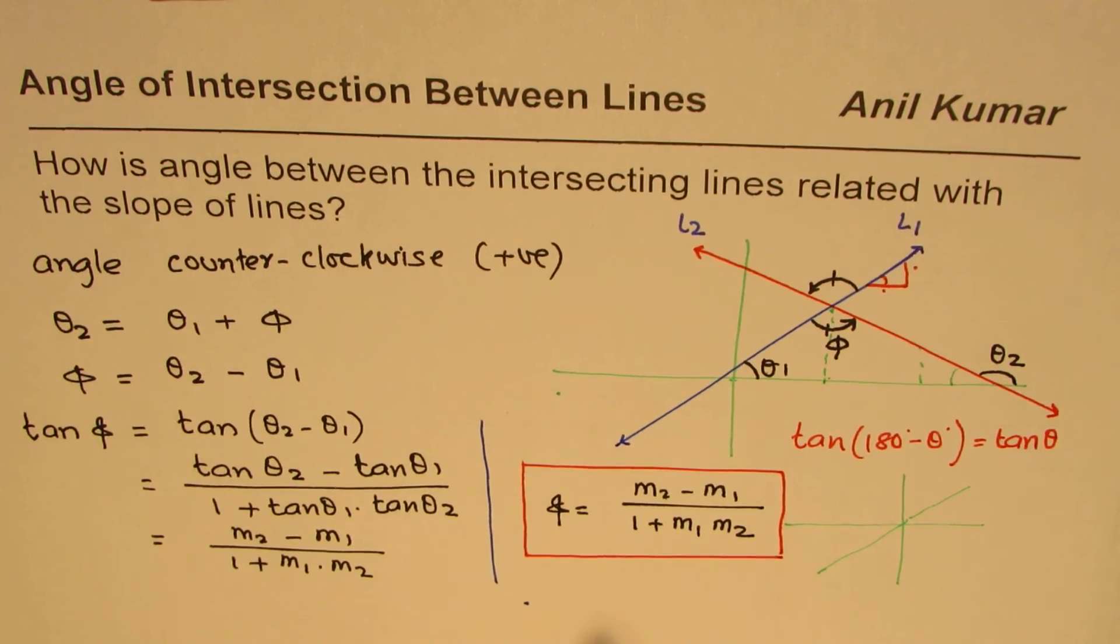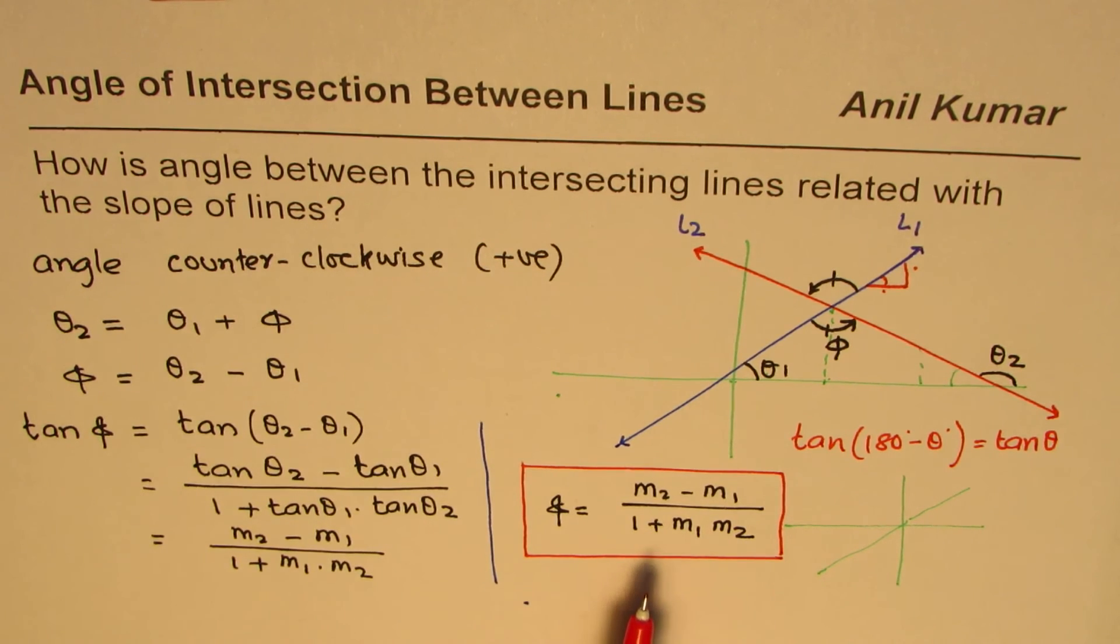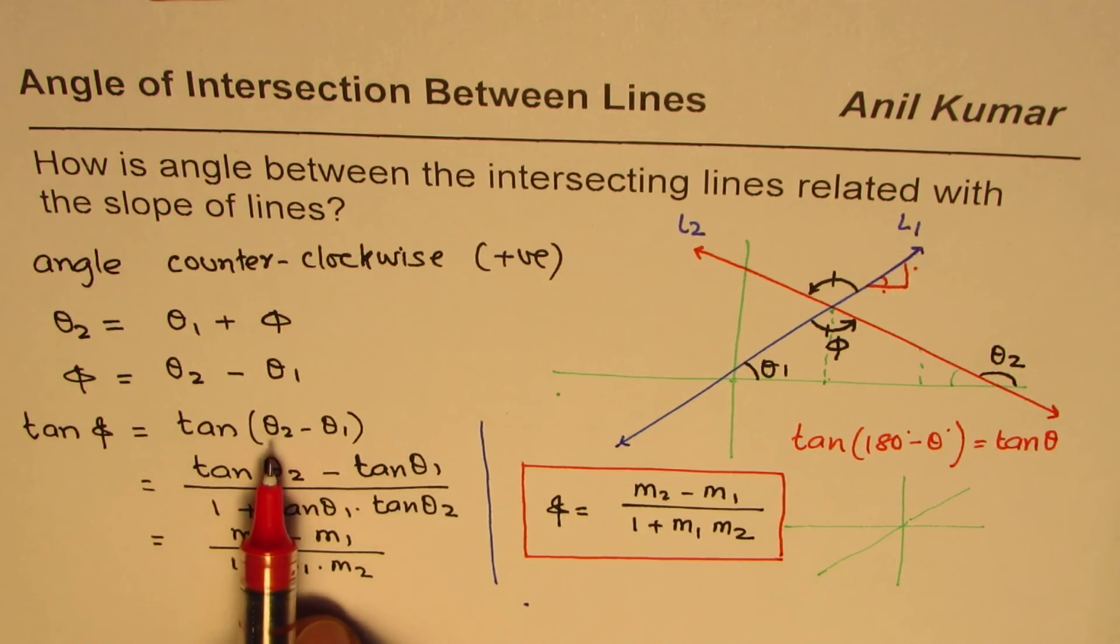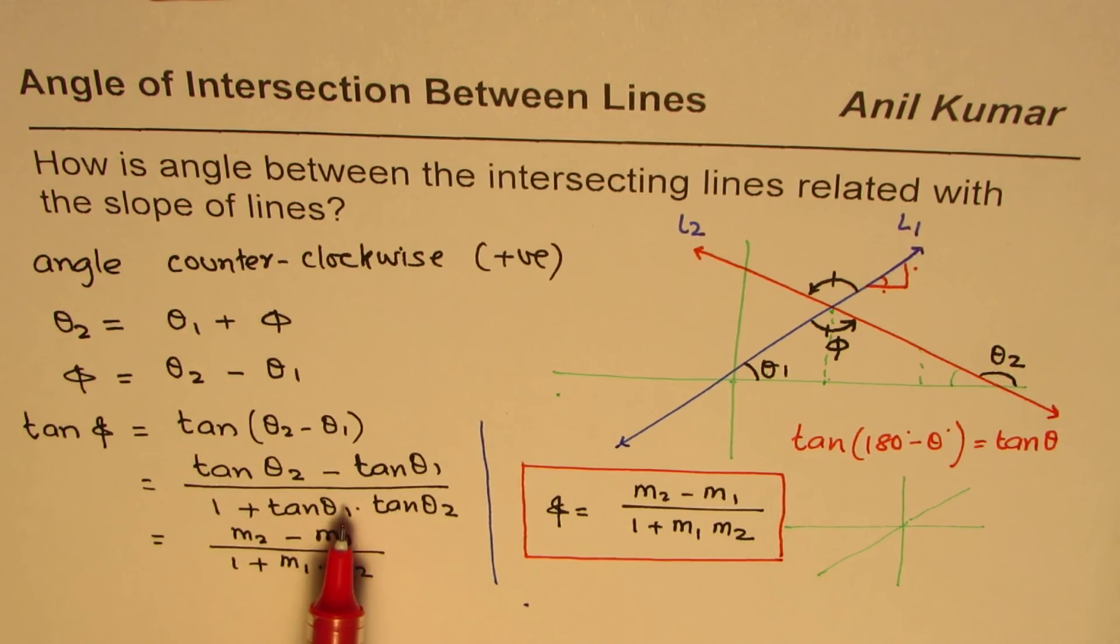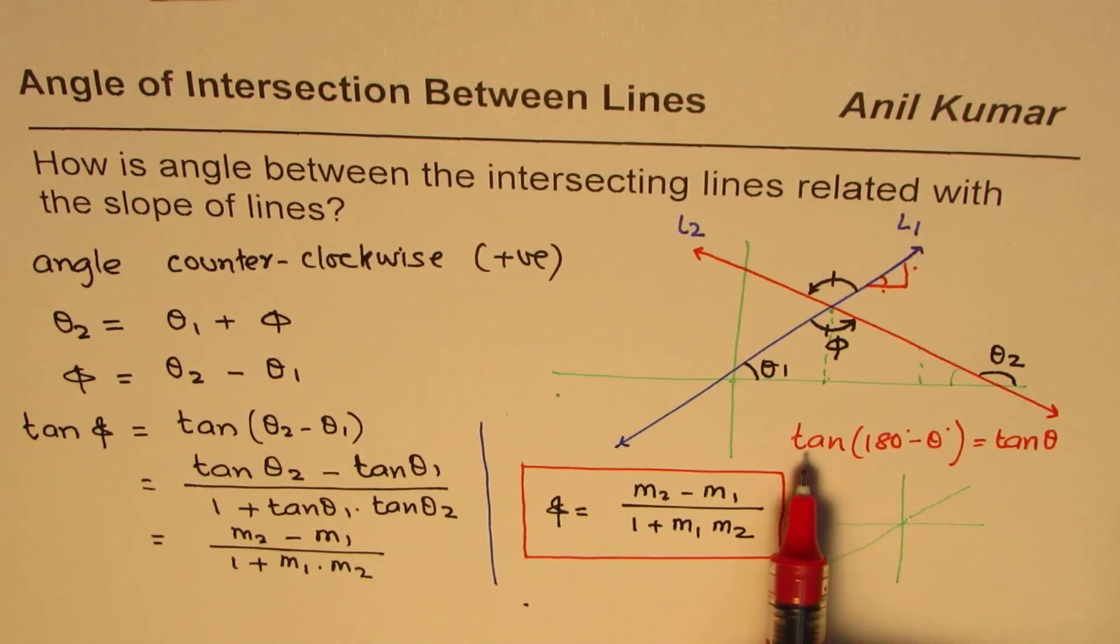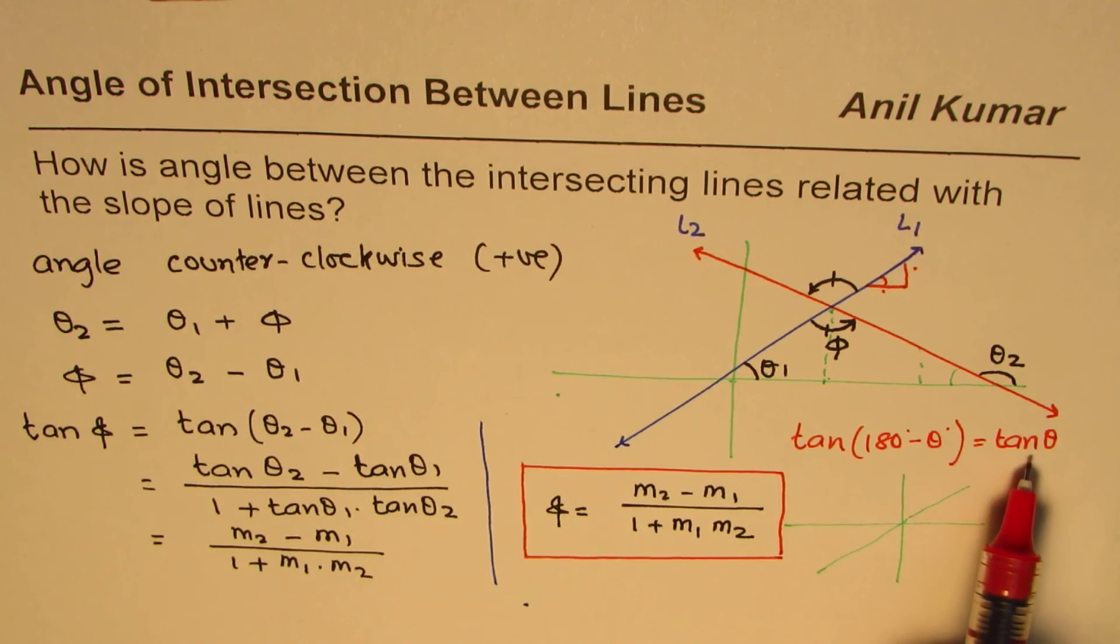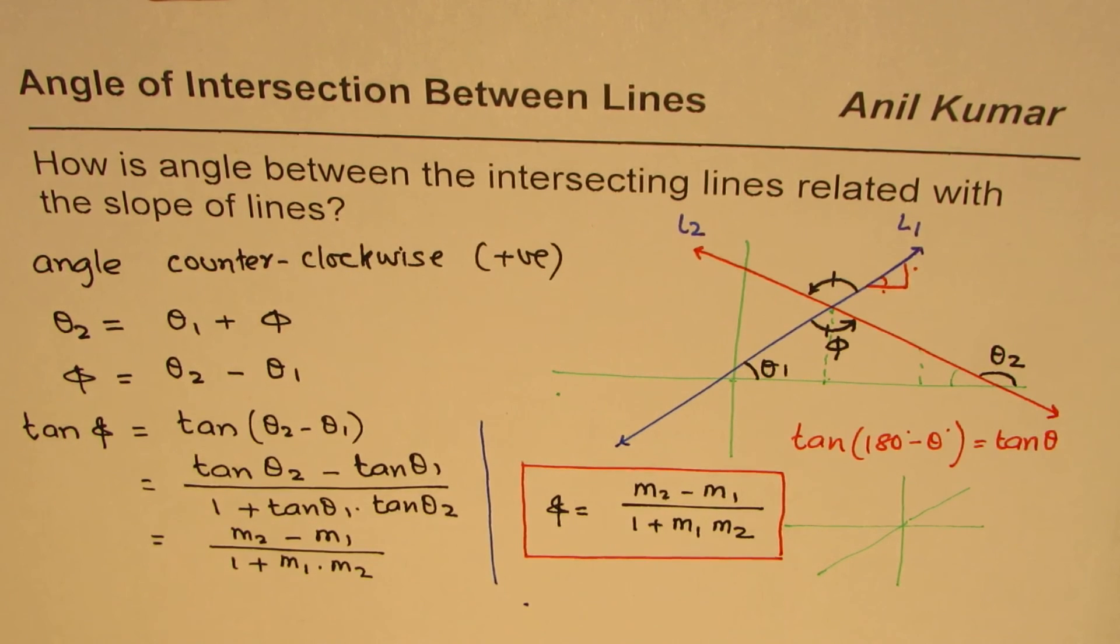So a few things which you may need to go through is the formula for tan a plus b or a minus b, which we have used here. Second, we also use the identity tan of 180 minus theta is tan of theta. So these two are very important things to review and understand what we have derived.